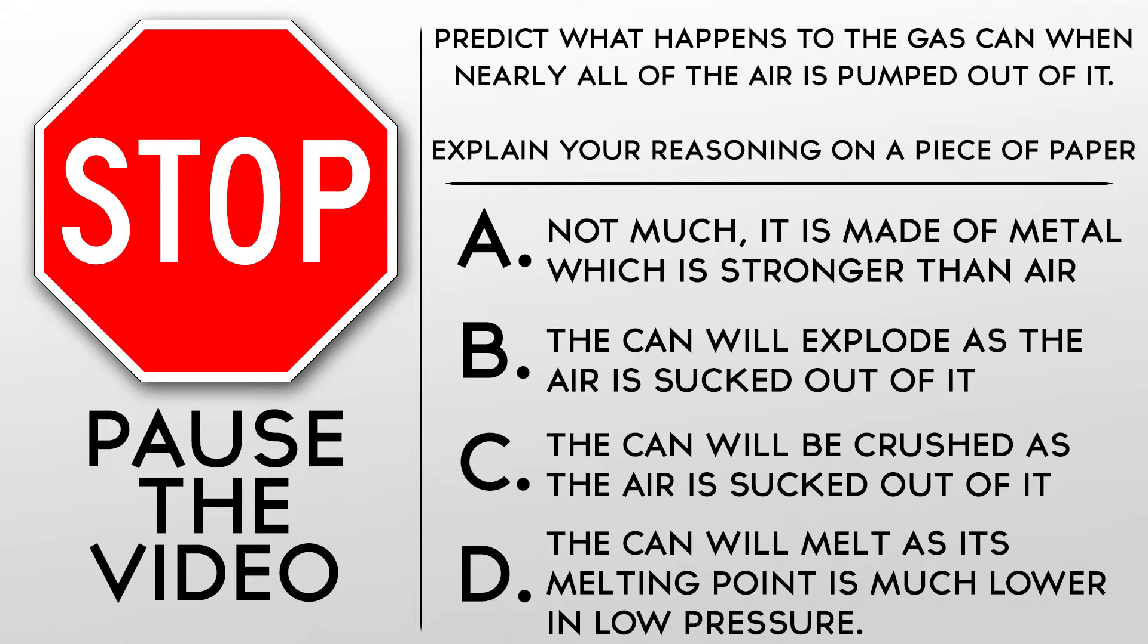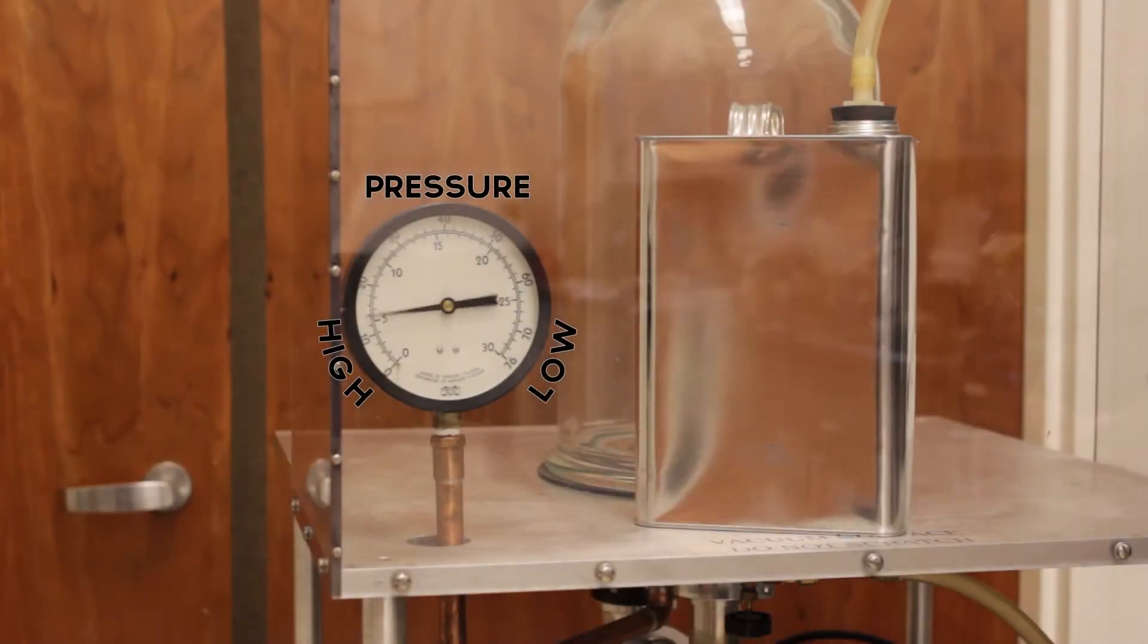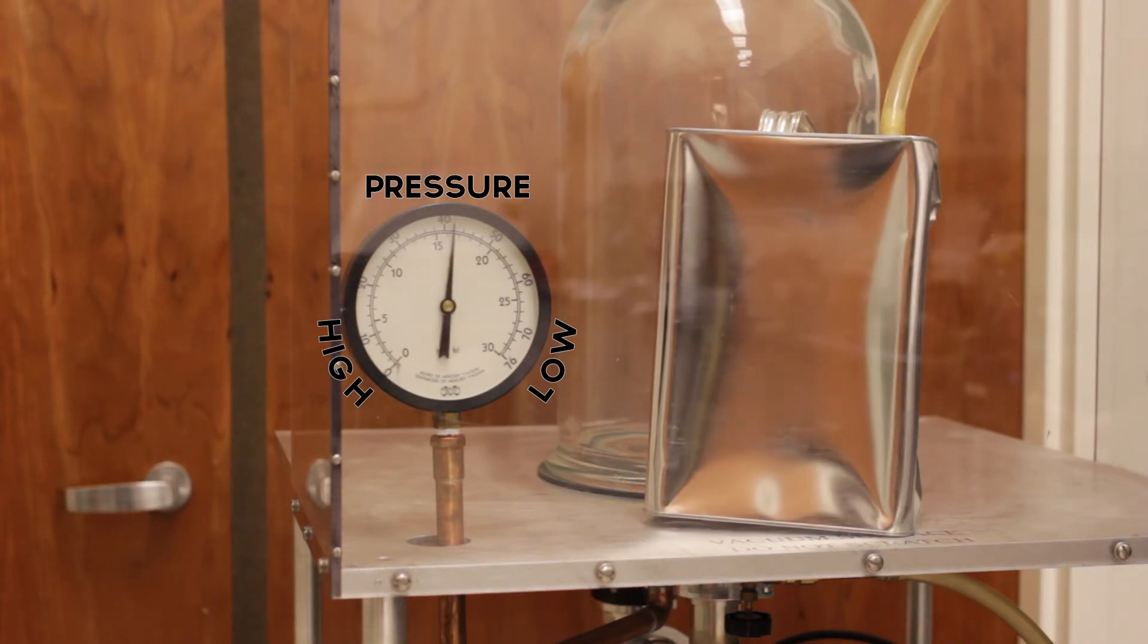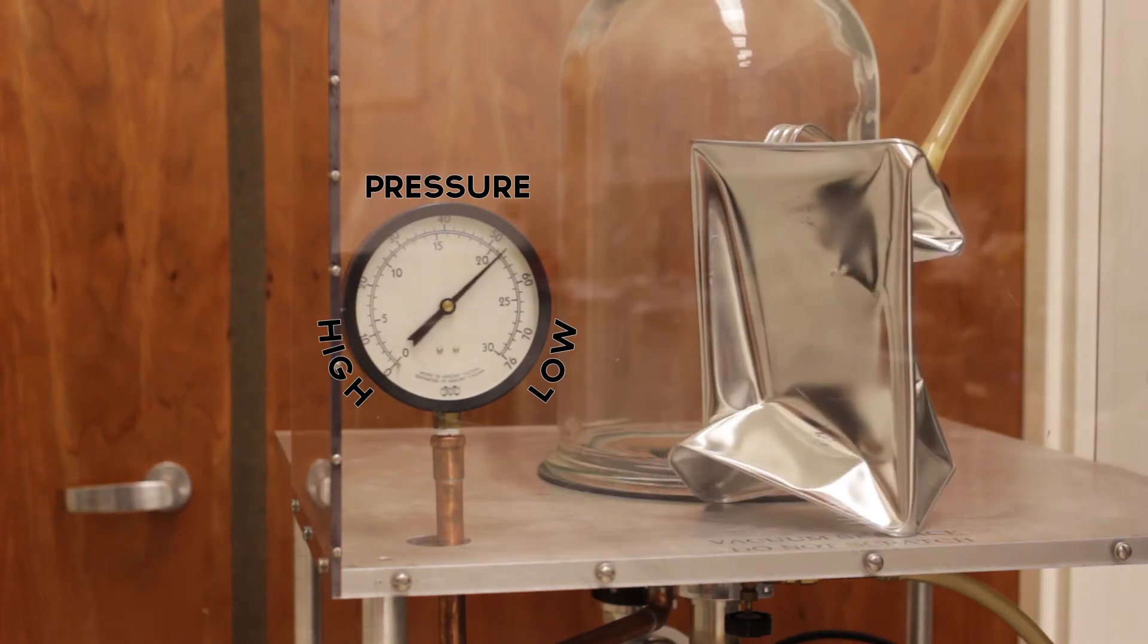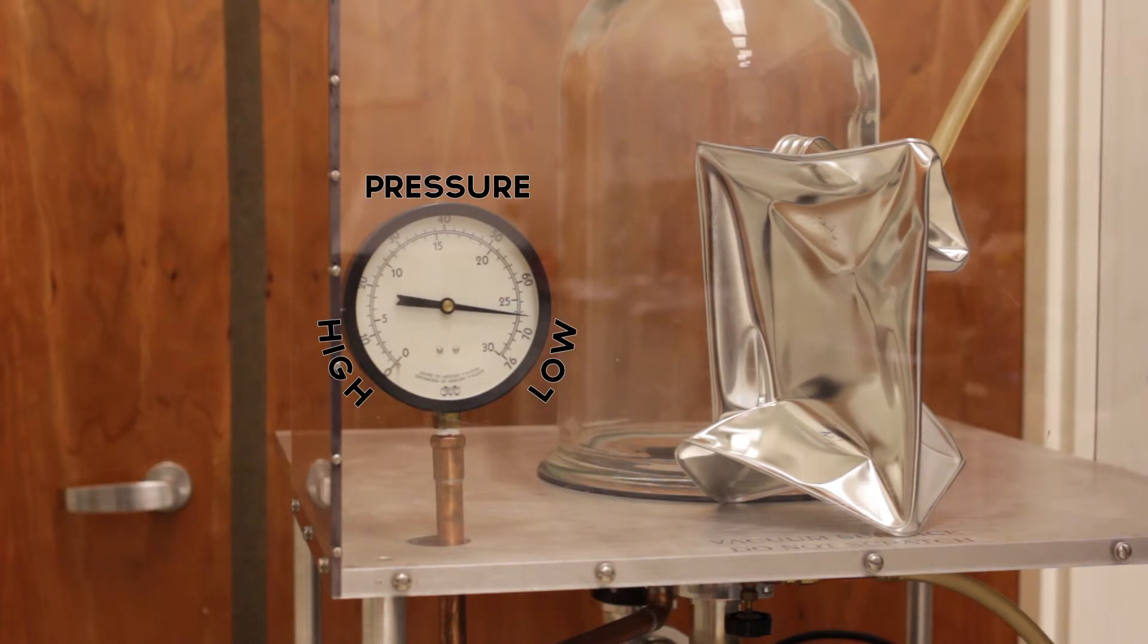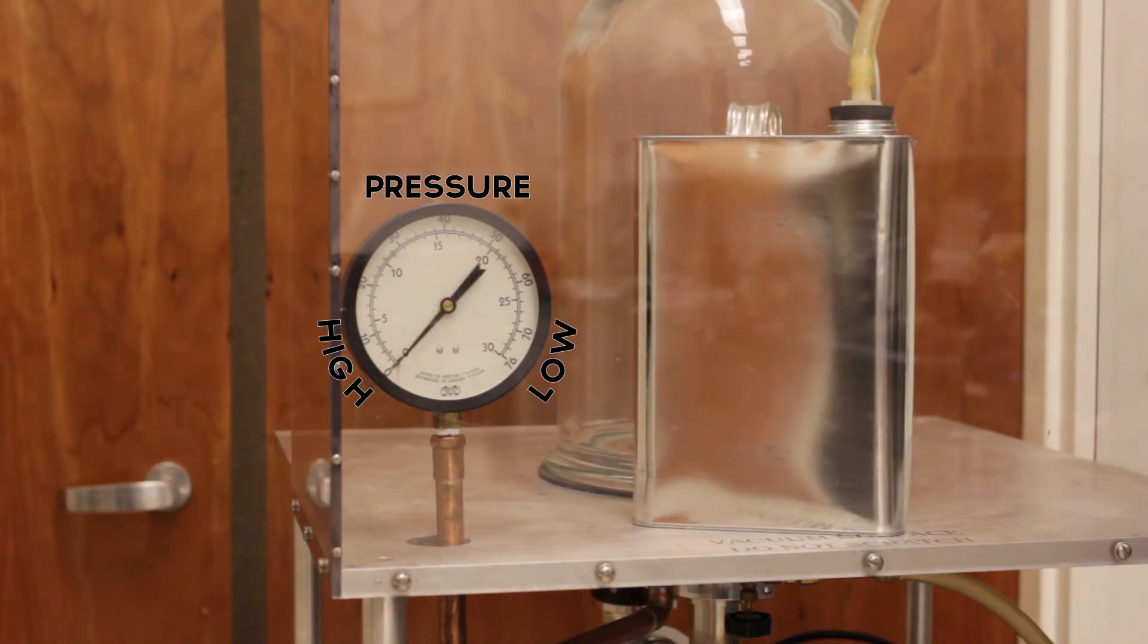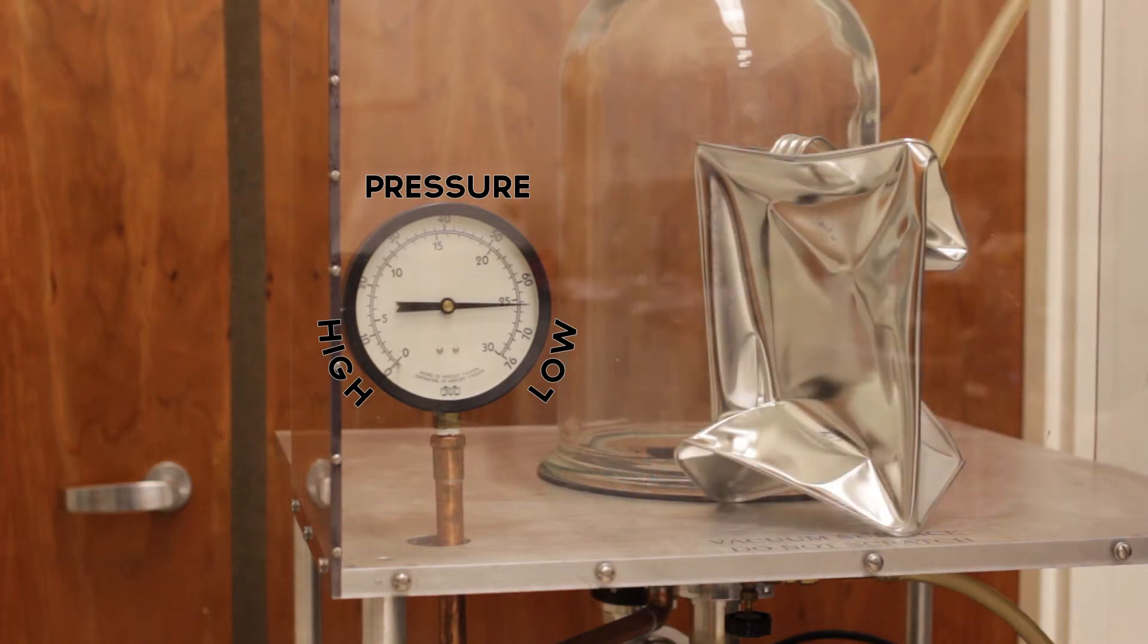We now turn on the vacuum pump and can read from the gauge the amount of pressure that has been removed. Note that the can is quickly crushed. When we started this video, there was 10.1 Newtons per square centimeter of air pressure both inside and outside of the can that were balancing each other. Once we remove the air from inside of the can, we only have atmospheric pressure on the outside pushing inward, and the can is crushed.